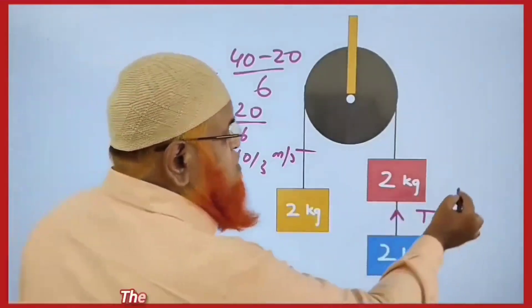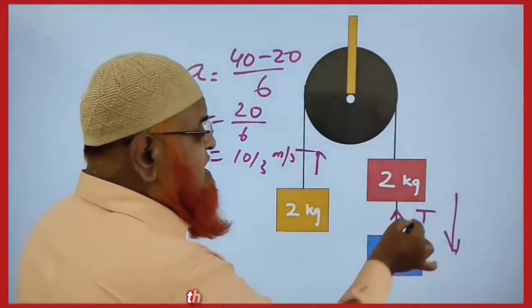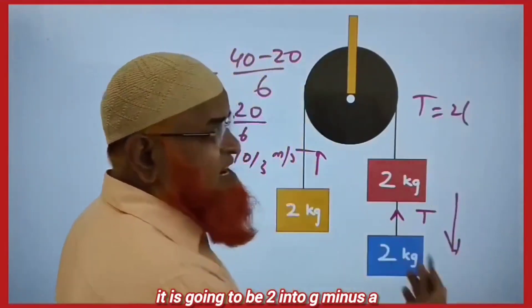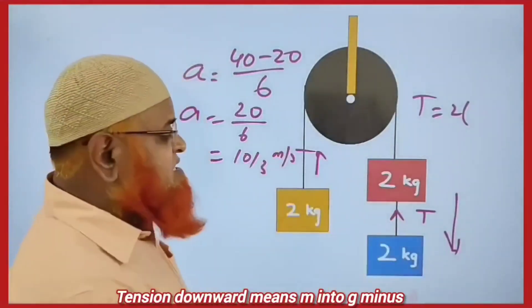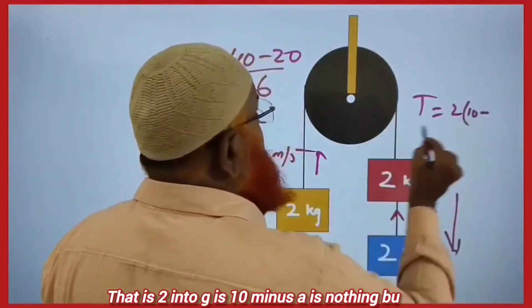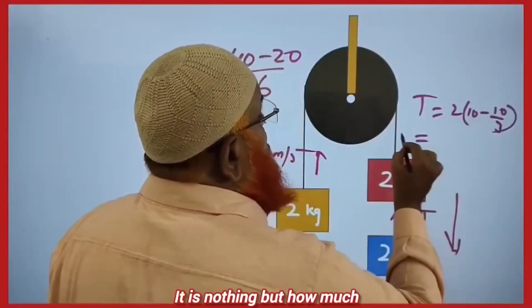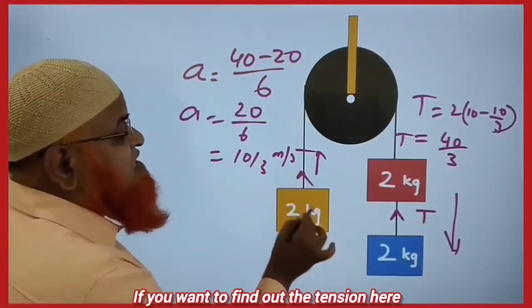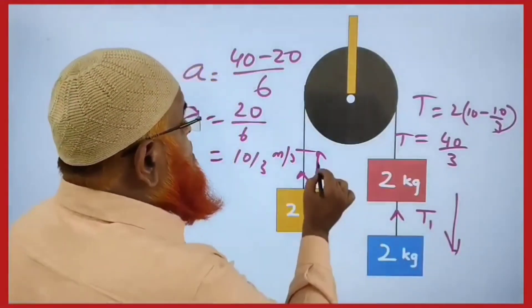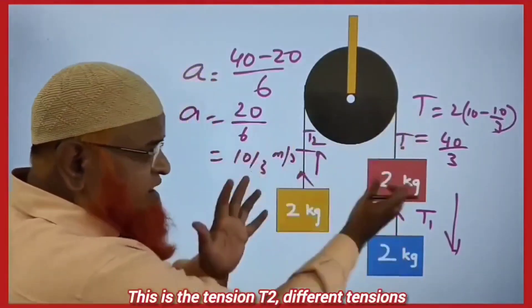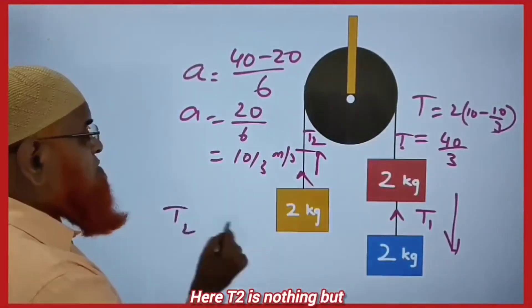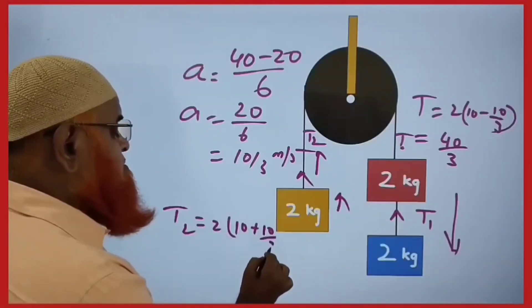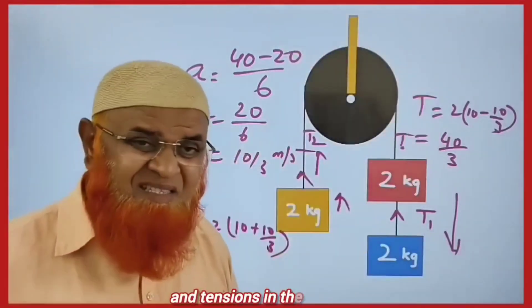You can find out the tension here. The heavier block moves down and the lighter one moves upward. For the block moving downward, tension is M into G minus A. That is 2 into (10 minus 10/3), giving tension T equal to 40/3 N. For the block moving upward, tension T2 is M into G plus A, which is 2 into (10 plus 10/3). These are different ropes, so the tensions are different.